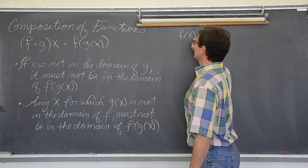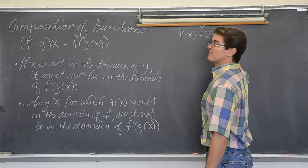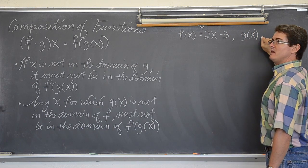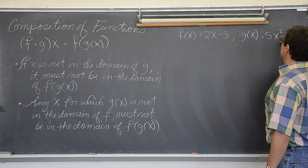f of x is going to be 2x minus 3 and g of x is going to be 5x squared minus 1.